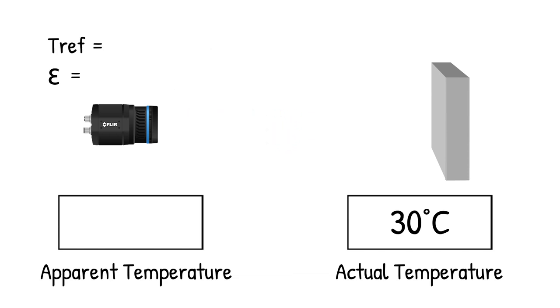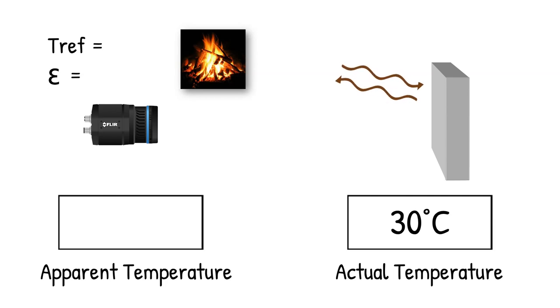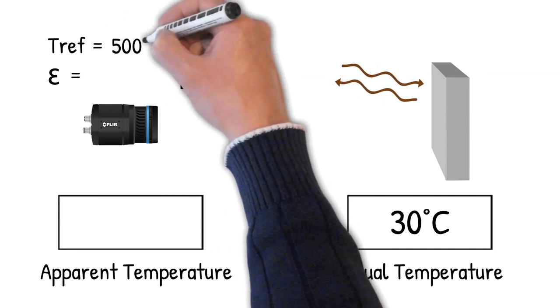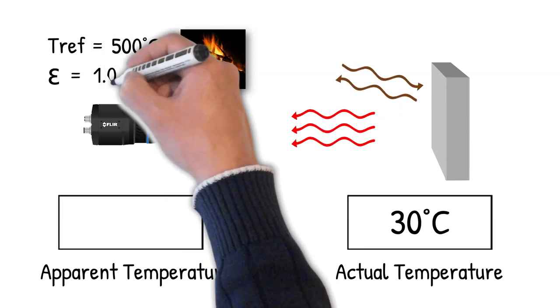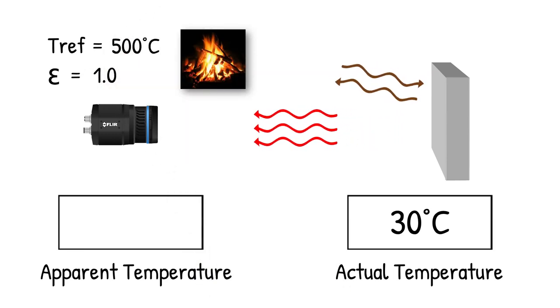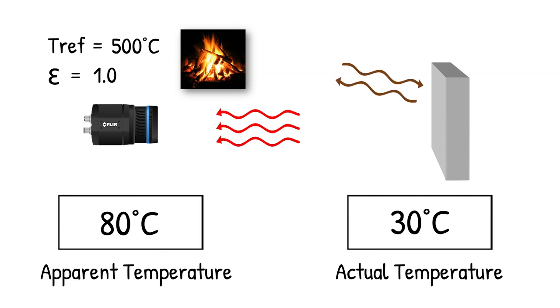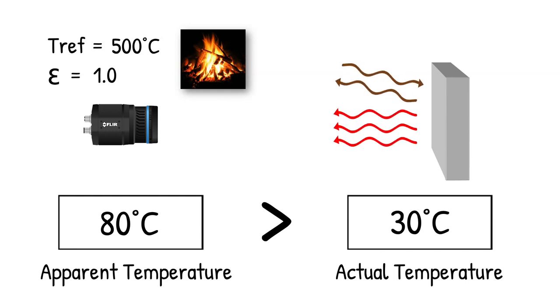If the reflected energy source is a large fire with a temperature of 500 degrees C, and the camera emissivity setting is set to 1, the infrared camera will report an apparent temperature higher than the actual target temperature. The 500 degree reflected radiation will add to the 30 degree emitted radiation from the target.